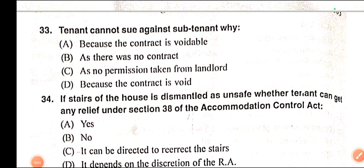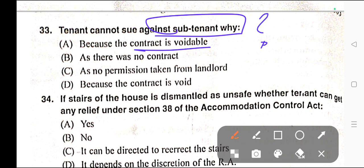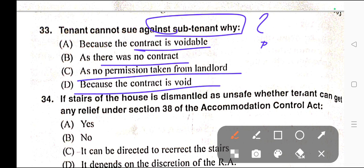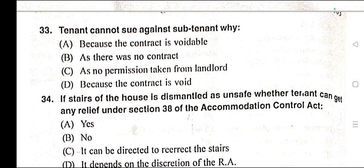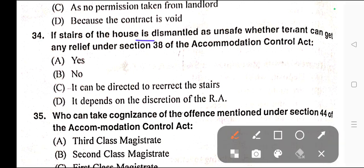Question number thirty-three: Correct answer is option C — as no permission was taken from the landlord. Options were: A) Because the contract is voidable, B) As there was no contract, C) As no permission taken from landlord, D) Because the contract is void.